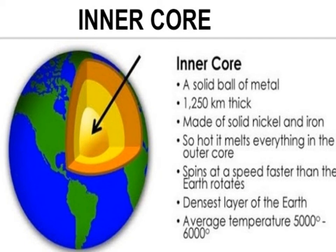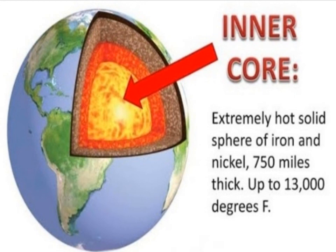The inner core is made up of solid iron and nickel and is about 1,500 miles thick. It is so hot that it would melt everything in the outer core, and it spins at a speed faster than the Earth rotates. The inner core is the densest layer of the Earth.